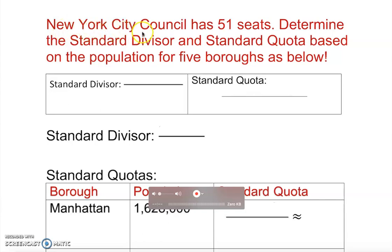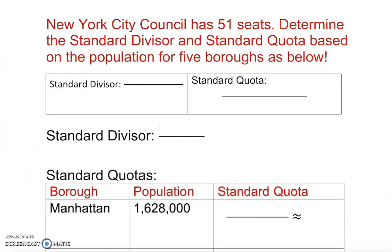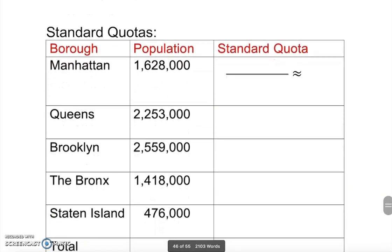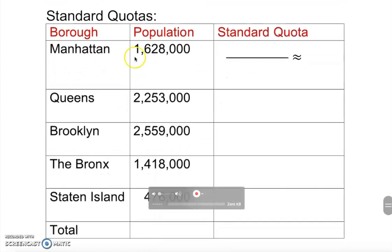Let's look into this example. New York City Council has 51 seats. Find out the standard divisor and standard quota based on the population for the five boroughs given below. These are the five boroughs' populations — Manhattan, Queens, Bronx — and these are the different boroughs with their totals.